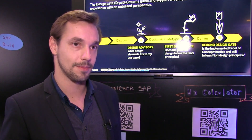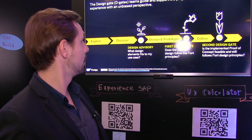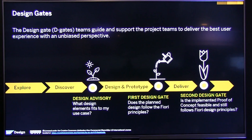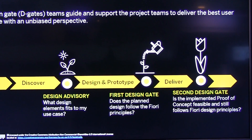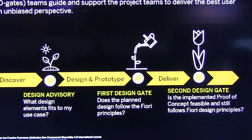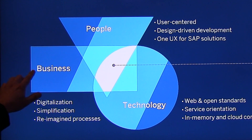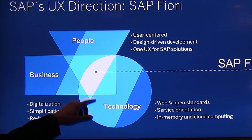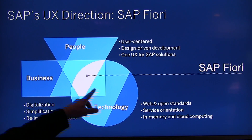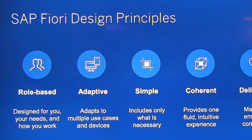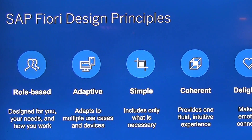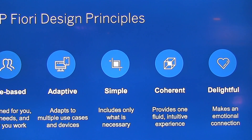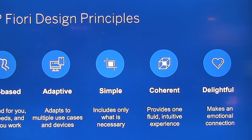During those processes, we have what we call the design gates. The first design gate, after the design and prototype phase, evaluates whether or not the prototype adheres to the three pillars of SAP Fiori's design methodology — where people, technology and business overlap — as well as SAP Fiori's design principles, which hold that solutions must be role-based, adaptive, simple, coherent and delightful.